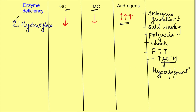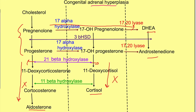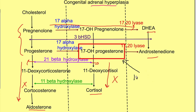The diagnosis of 21-alpha hydroxylase deficiency also depends on checking the levels of 17-hydroxyprogesterone in blood. Since the pathway is blocked, this chemical accumulates in blood and its levels can increase up to 1000 to 2000 times normal.